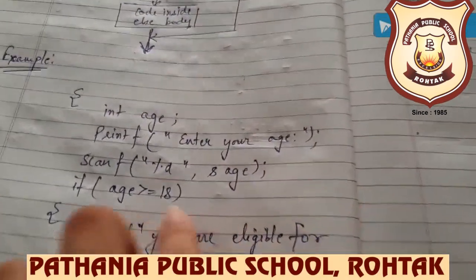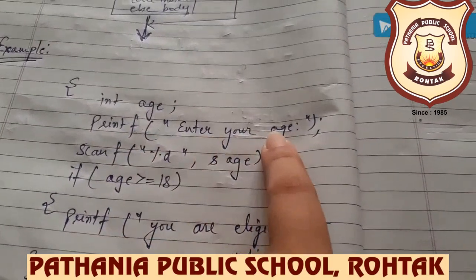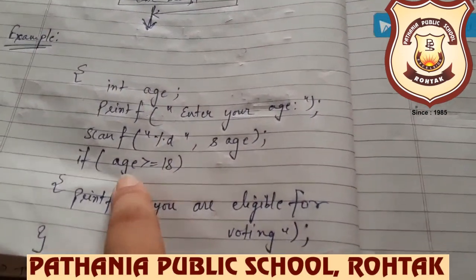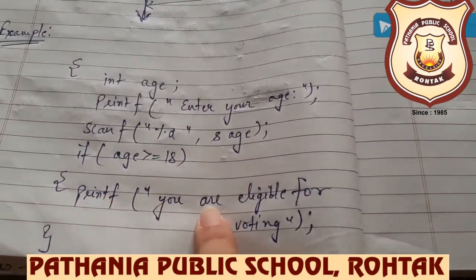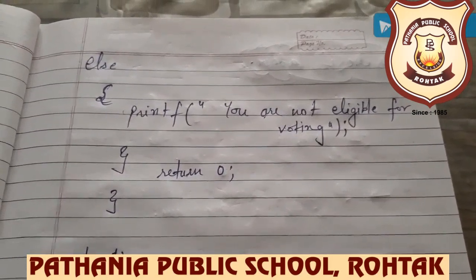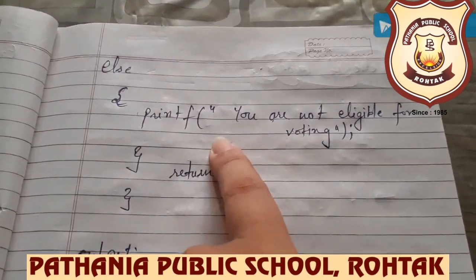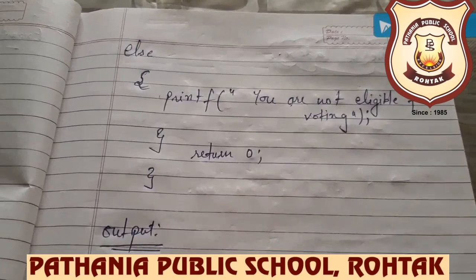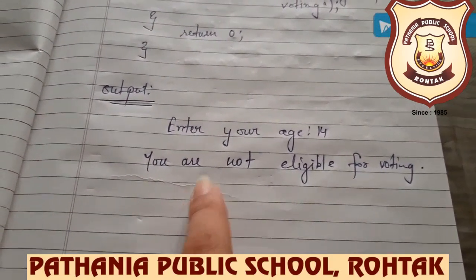See the example. You have an age variable. The statement says: enter your age. The first condition is: if age is greater than or equal to 18, then execute the program and print 'you are eligible for voting'. Otherwise, if the if condition is false, it will execute the else part and those statements. The difference between if and if-else is that we have two conditions: if our condition is true it executes the if part, otherwise it executes the else part.